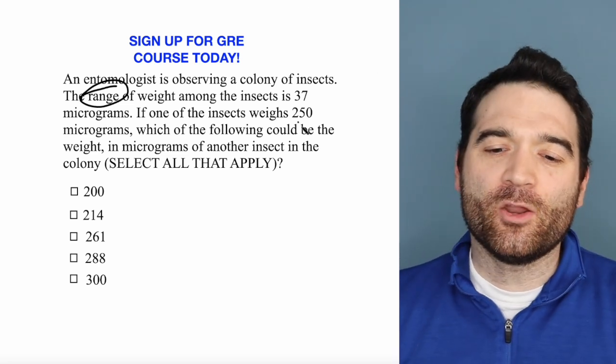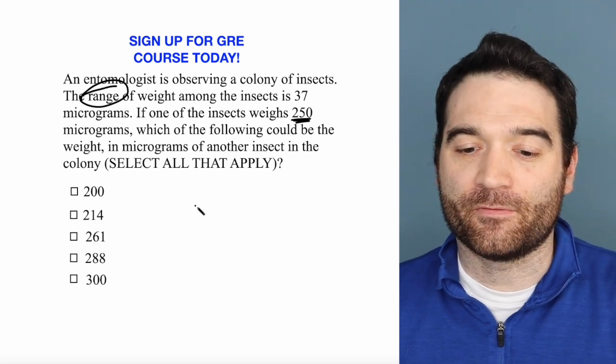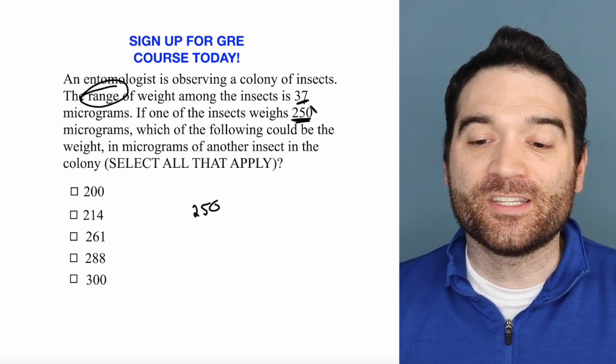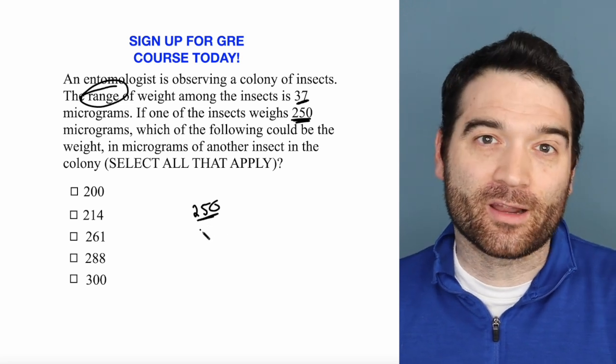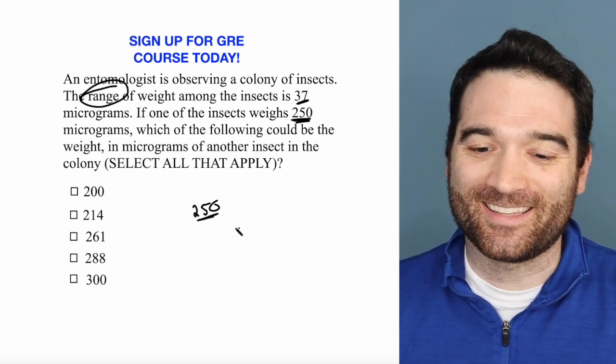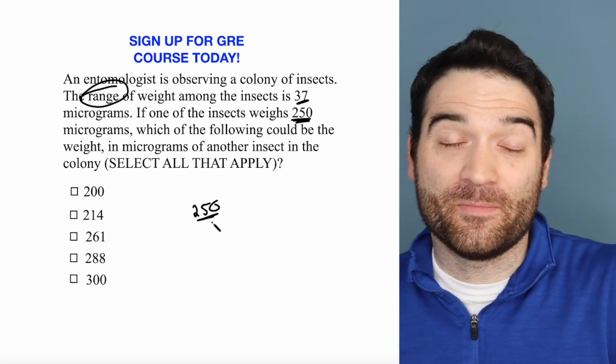Now, the only thing that we know about these insects is that one of them weighs 250 micrograms and the range is 37. Do we know if this 250 microgram insect is the biggest one or the smallest one? We don't. It could be somewhere in the middle, could be the biggest, could be the smallest.